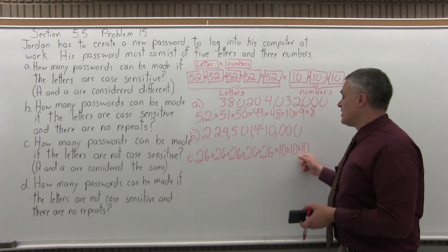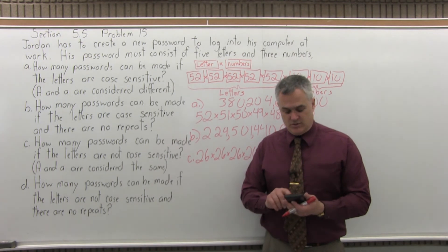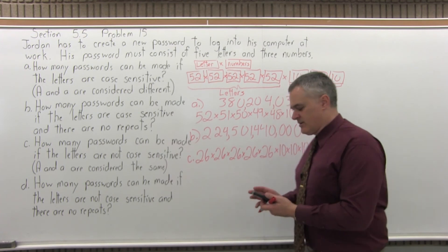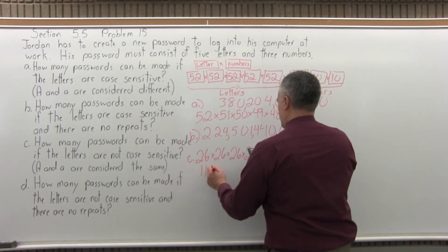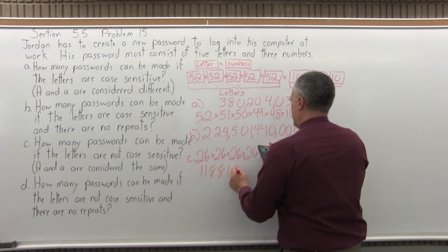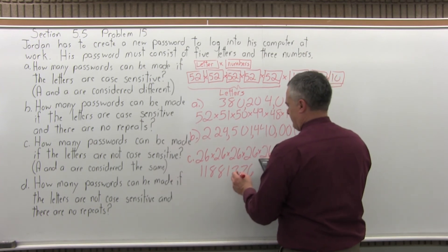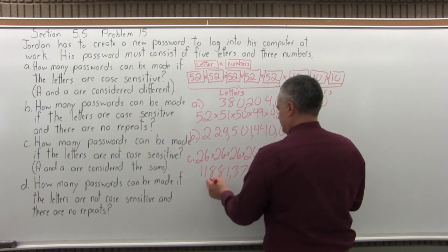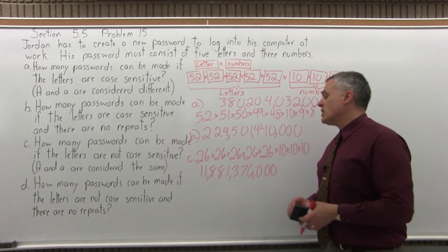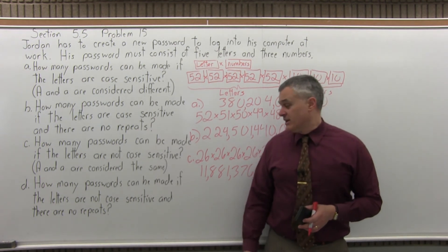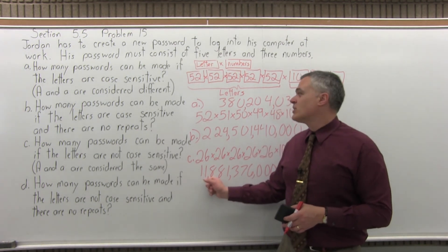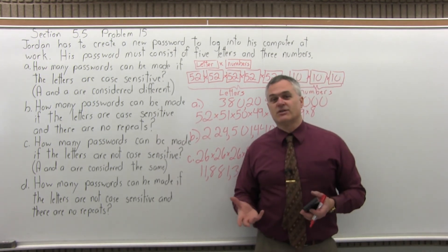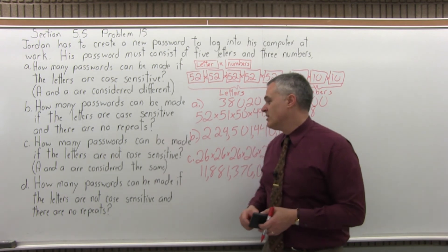Then three tens multiplied together, you'd have ten choices for each number. Multiplying that out, my calculator tells me that comes out to eleven billion, almost twelve billion. Still a lot, but quite a bit less than when the letters are case sensitive. So passwords with case sensitive letters are a little bit more secure. And that's C.